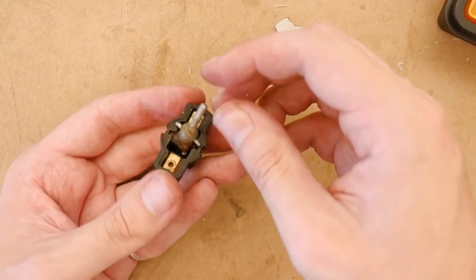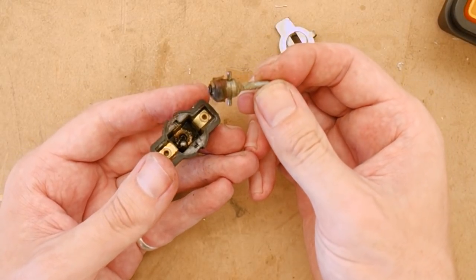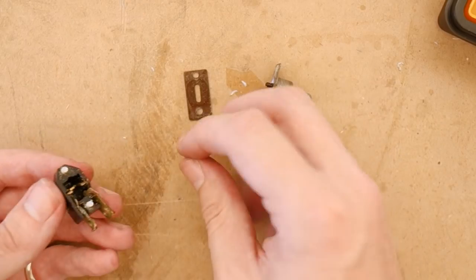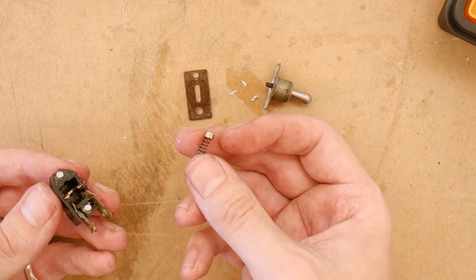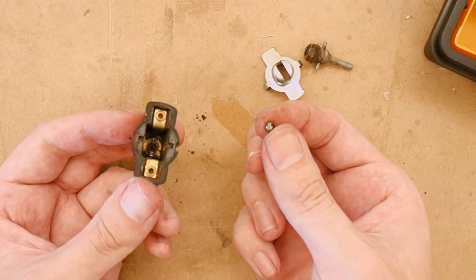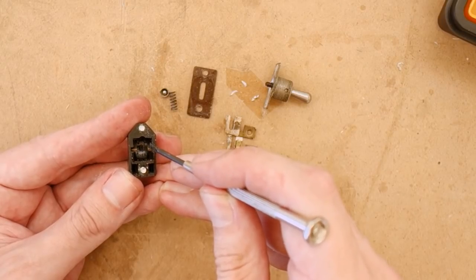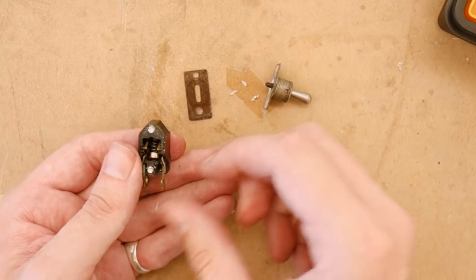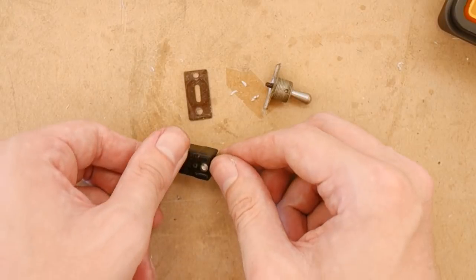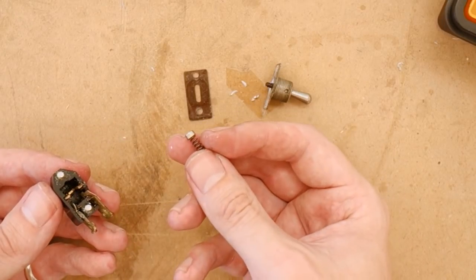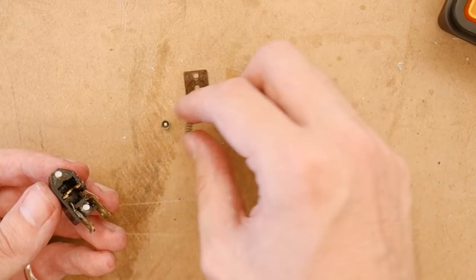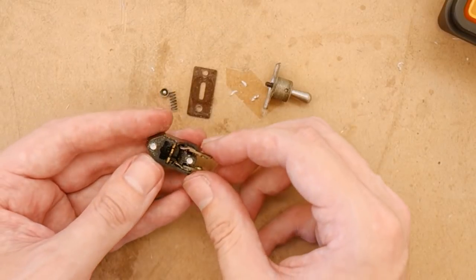As you can see all the switches look ever so slightly different inside, and deal with creating the toggle functionality slightly different as well. A couple of them uses a small bearing ball, and others use a small cradle that swings back and forth. What is common with all of them though, except for the pull switch, is that there is a spring inside which holds tension on the toggle and which snaps over when you flip the switch.